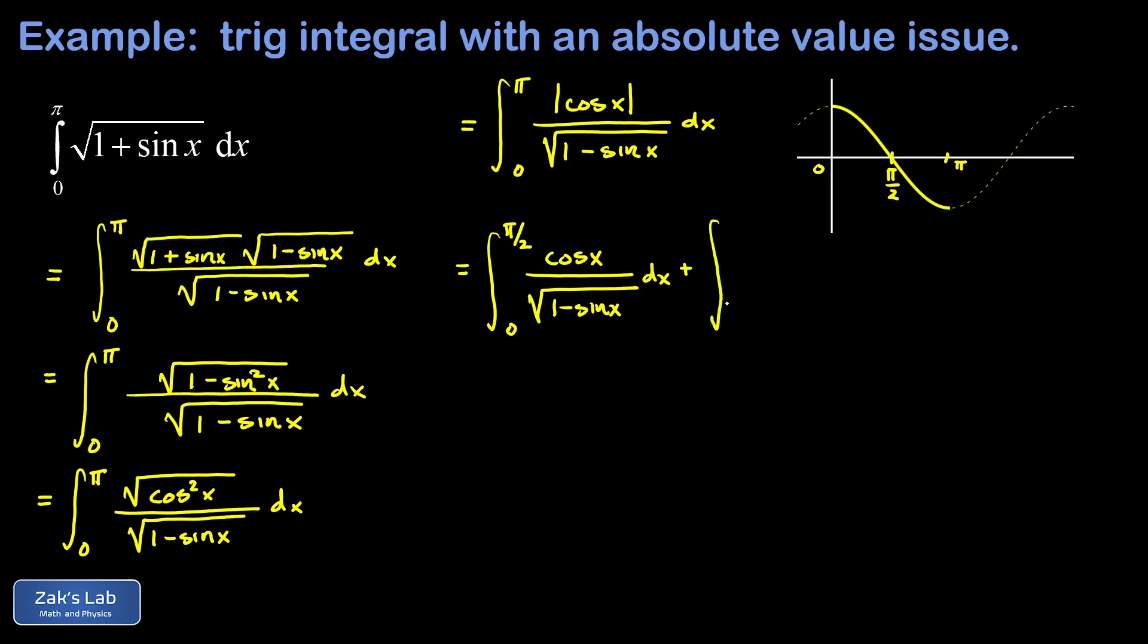Where the cosine function is negative the absolute value multiplies it by negative one. So on this interval pi over 2 to pi, the absolute value of cosine x is negative cosine of x, guaranteeing that we get a positive output.